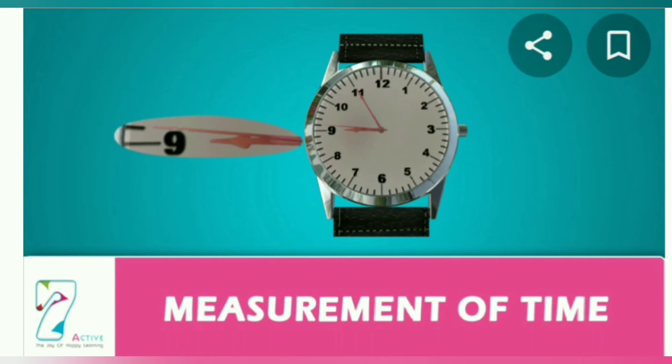Children, we measure time with the help of clock or watch, and nowadays we are using mobiles also to know the time. The standard unit of time is seconds. 60 seconds is equal to 1 minute, and 60 minutes is equal to 1 hour. We measure the time using the clock or watch.